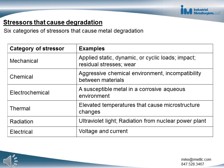Examples of each type of stressor are shown here. When a component or joint between components fails during use, it's because the stressor has caused degradation of the material to the point where the component or joint can no longer perform as required. At that point, the component or joint has failed.